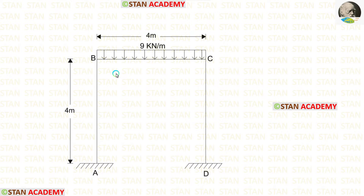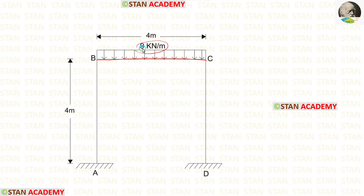In the columns, there are no loads. In the beam BC, there is a uniformly distributed load of 9 kilonewton per meter, acting for the full span. The height of the columns is 4 meters and the length of the beam is also 4 meters. This frame is a non-sway type frame because we have symmetrical loading and symmetrical dimensions.